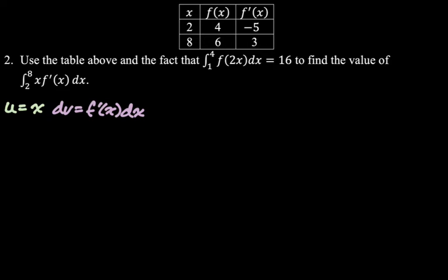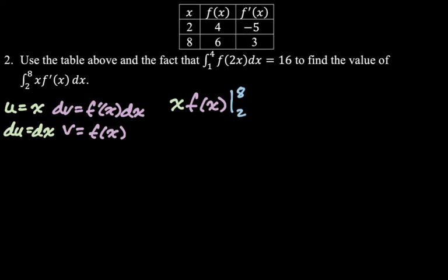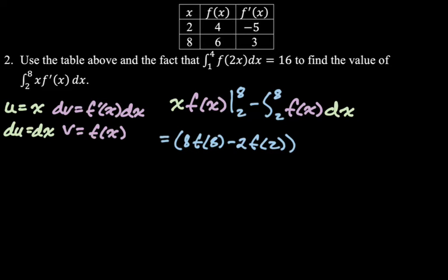We pick u and dv, find du and v, and dive in. It's uv from 2 to 8, minus the integral from 2 to 8 of v du. We plug in 8 and 2, getting 8 f of 8 minus 2 f of 2. That deals with the first part. We still need to handle minus the integral from 2 to 8 of f of x dx. So we need to go hunting and figure out what to do with that.